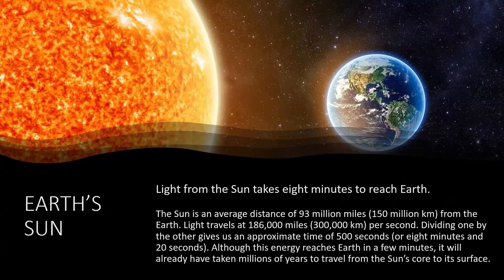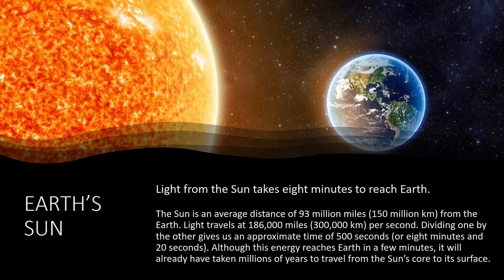For the light to get from the Sun to the Earth, it takes eight minutes. The Sun is an average distance of 93 million miles, or 150 million kilometers, from the Earth. Light itself travels at 186,000 miles per second, or 300,000 kilometers per second. Dividing one by the other gives us the approximate time of 500 seconds, or 8 minutes and 20 seconds. Although this energy reaches Earth in a few minutes, it will already have taken millions of years to travel from the Sun's core to its surface. It takes a long time to get from the inside of the Sun to come to the surface, and then is emitted to the solar system. We're talking about millions of years traveling inside the Sun to traveling eight minutes to get from the Sun to us.